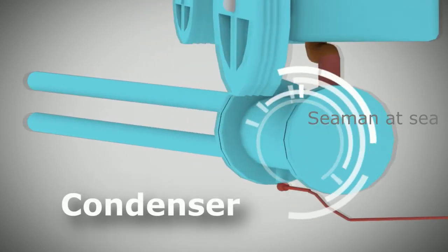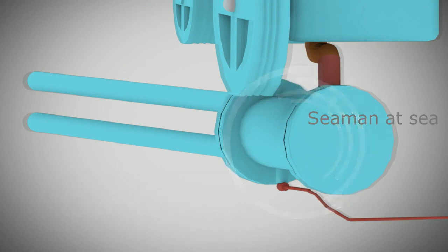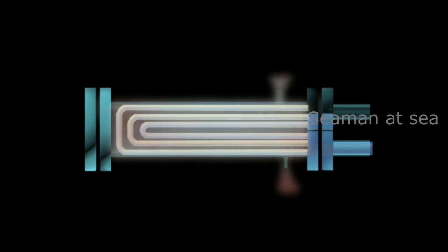Condenser tubes provide heat transfer surfaces in which heat from the hot refrigerant on the outside of the tubes passes through the walls of the tubes to the cooling water inside.